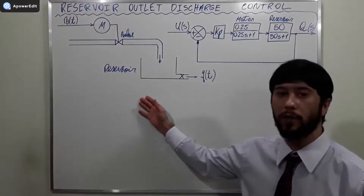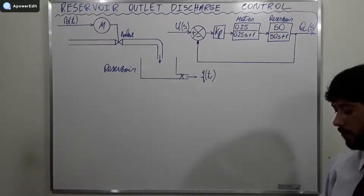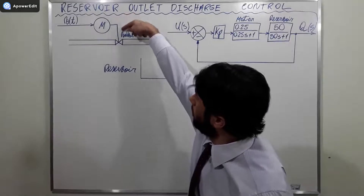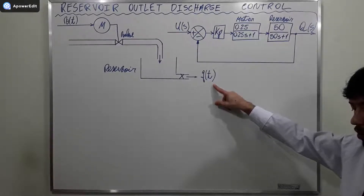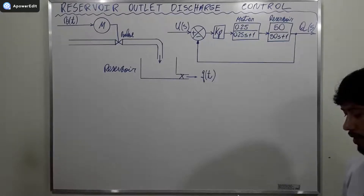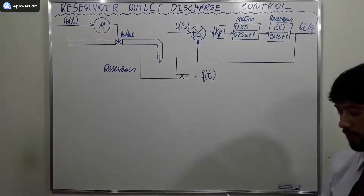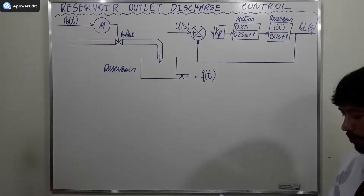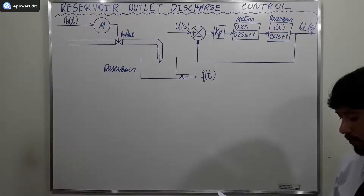I am going to read the problem. The theory illustrates the discharge control system for the outlet of a reservoir by adjusting a valve actuated by a direct current motor. The output flow Q(t) is controlled by varying the opening and closing of the valve, which in turn depends on the voltage applied to the motor's terminals V(t).